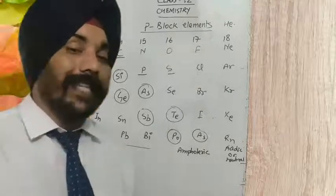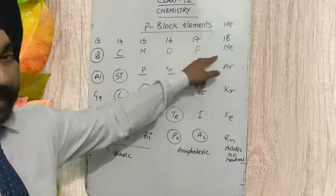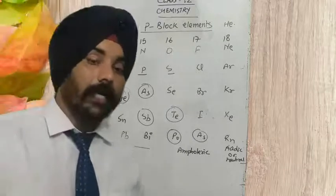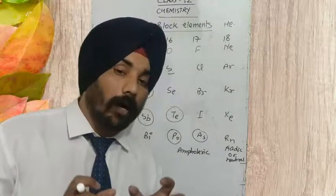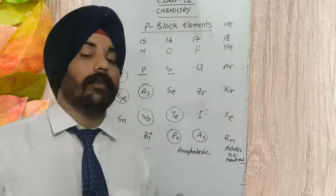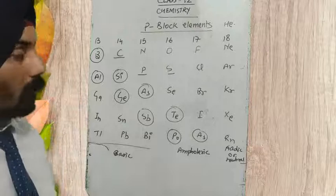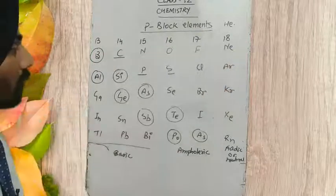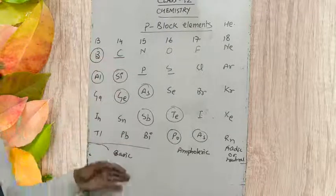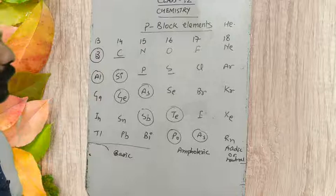And top to bottom in the group, if we are talking about the acidic nature of these oxides — the electropositive character of the element is increasing and electronegativity is decreasing. So the acidic character of the oxides of these elements is going to decrease. And basic character is obviously increasing top to bottom.